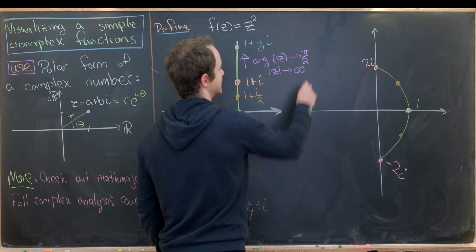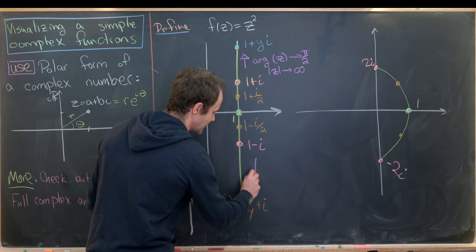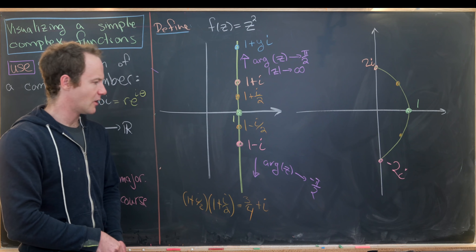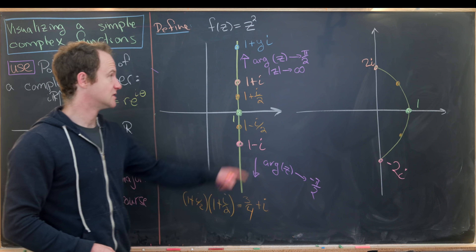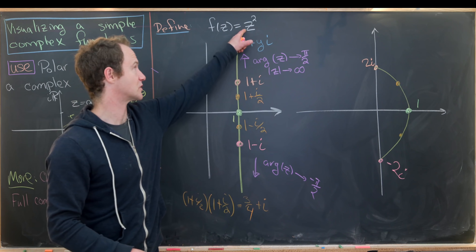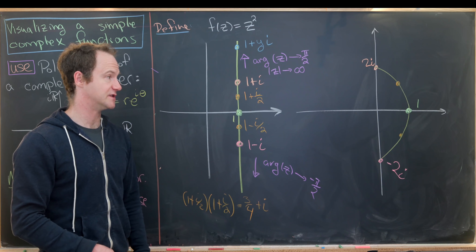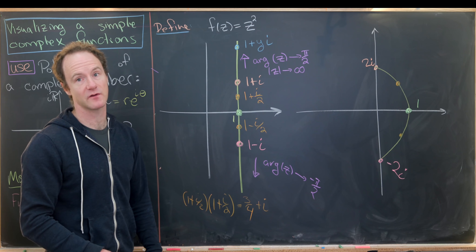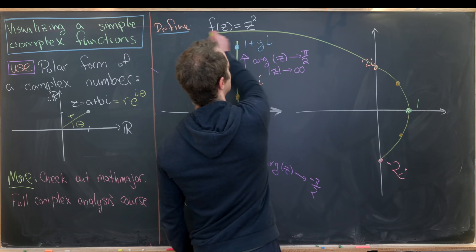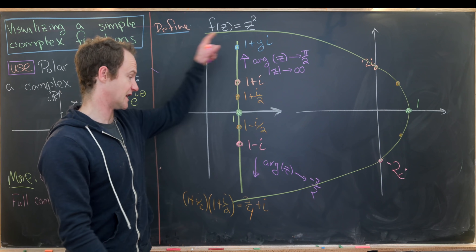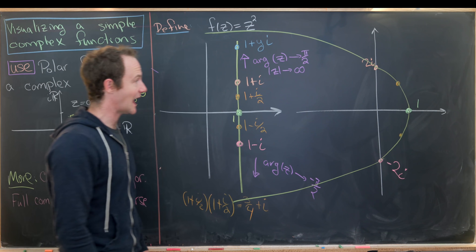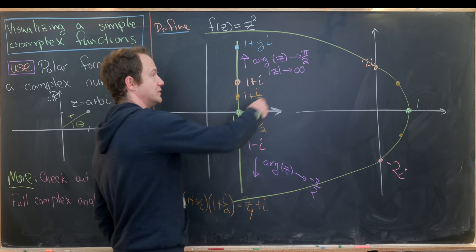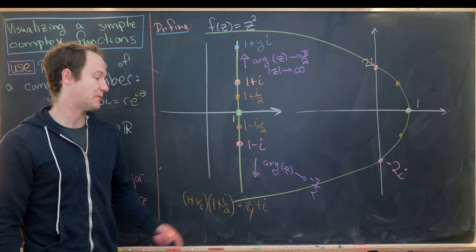Similarly, in the downward direction the argument tends toward -π/2. Since we're squaring — doubling the argument — the argument of the outputs tends toward π in one direction and -π in the other. So the image of this vertical line explodes off to the left-hand side, with the real part's growth outpacing the imaginary part's growth so that the argument approaches π and -π.